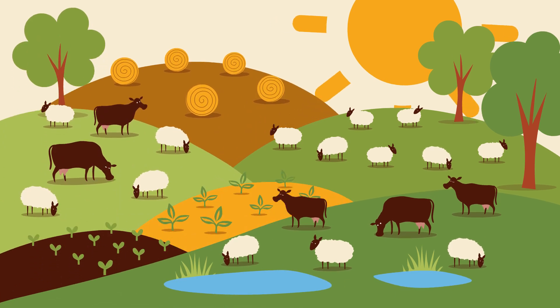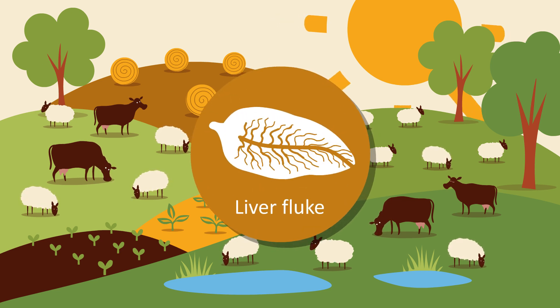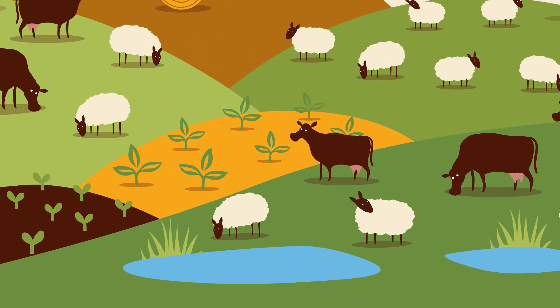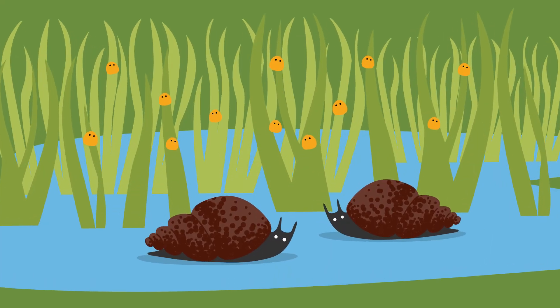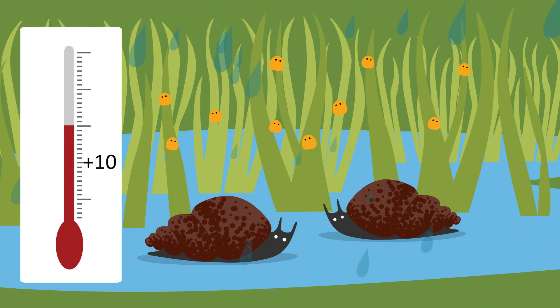Despite this peaceful grazing scene, lurking within these animals and on the ground could be a nasty parasite. The liver fluke is a parasitic flatworm that can cause significant disease and production losses in grazing animals. The fluke has a complicated life cycle involving a tiny mud snail, so fluke is typically found on low-lying, boggy or fluky ground. Fluke also thrive in climatic conditions that suit the snail, so mild winters and warm wet summers.